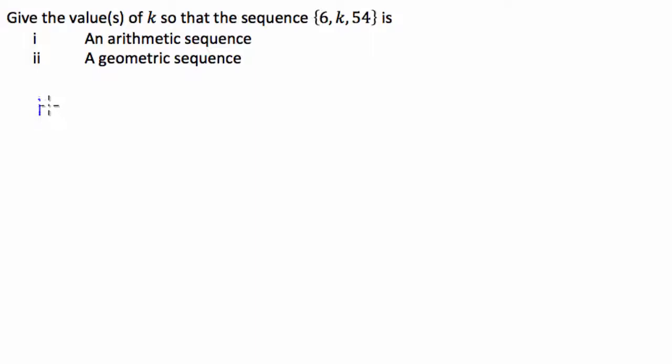Number 1. So, an arithmetic sequence. An arithmetic sequence is a sequence which goes up by a constant difference. For example, we can describe an arithmetic sequence as T_{n+1} = T_n, the number before it, plus some constant difference d.